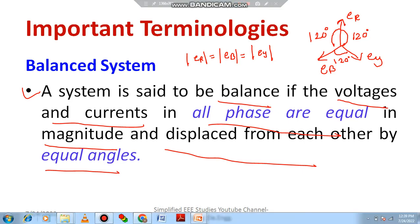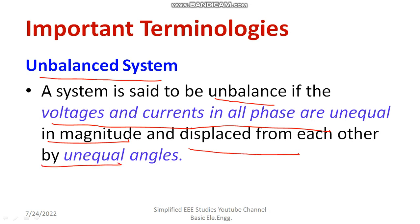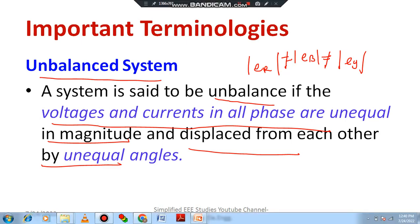When do you say that a system is unbalanced? It is just the opposite of a balanced system. A three-phase system is said to be unbalanced if the voltages and currents in all the phases are unequal in magnitude and the displacement angle between each phase is not equal. The magnitudes: |eB| ≠ |eR| ≠ |eY|. Also, the angle between each conductor will not be 120 degrees — it won't be an equal angle.